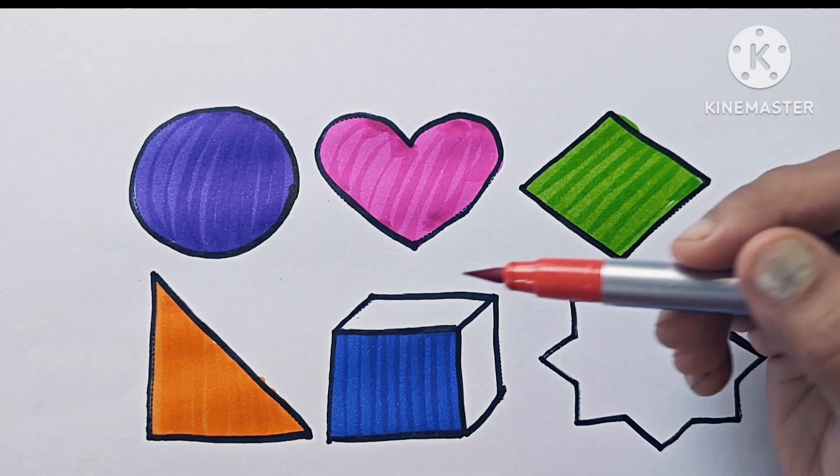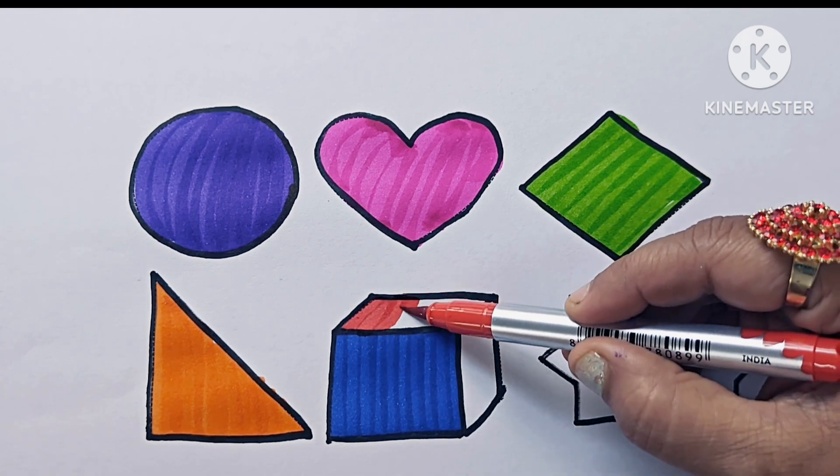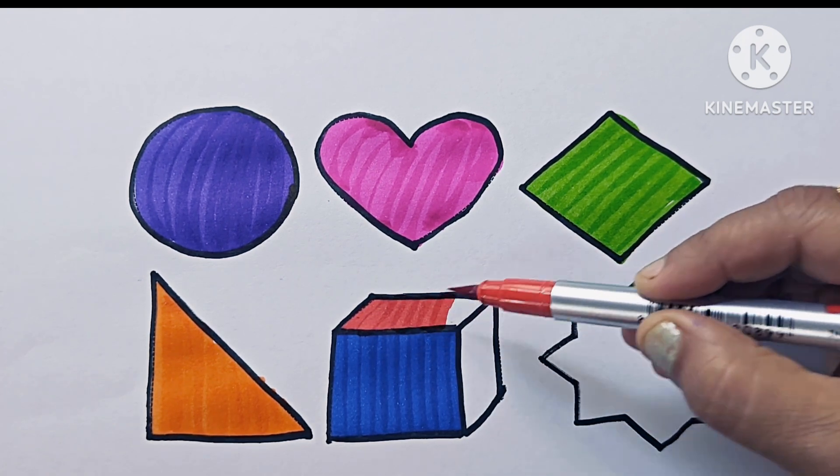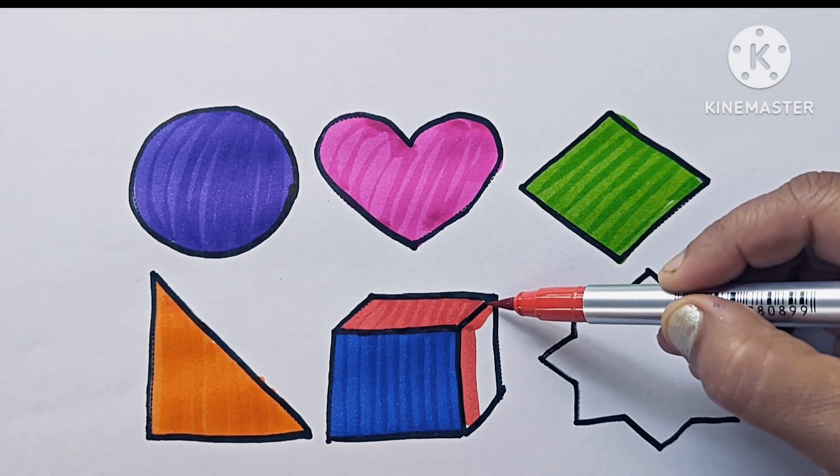Red color. Cube has 6 faces, 12 edges, and 8 corners. Dice and ice cubes look like cube.